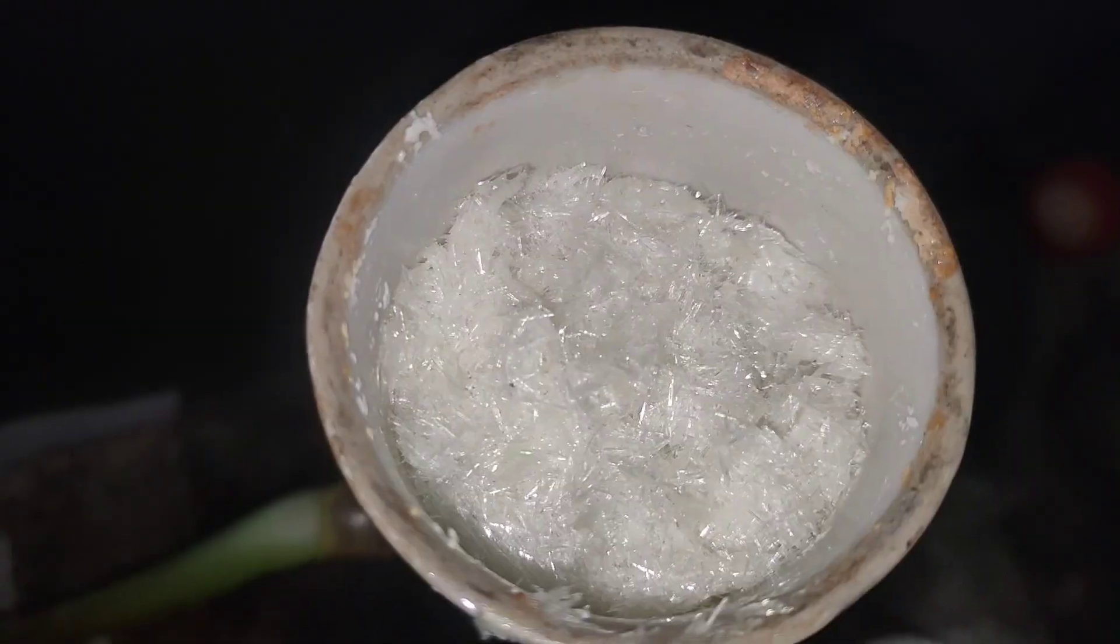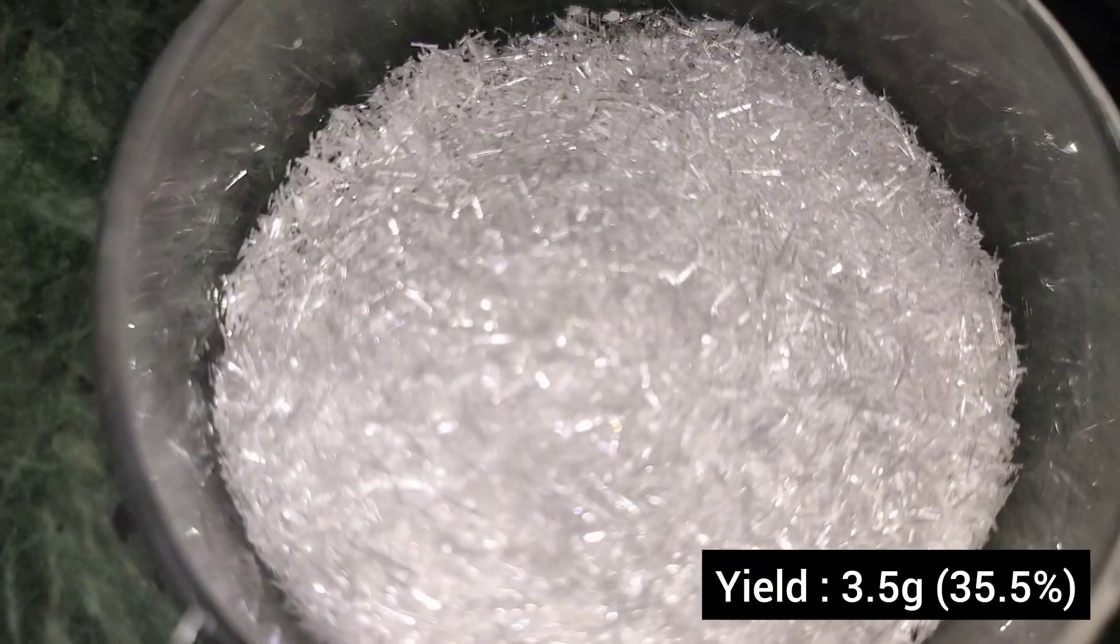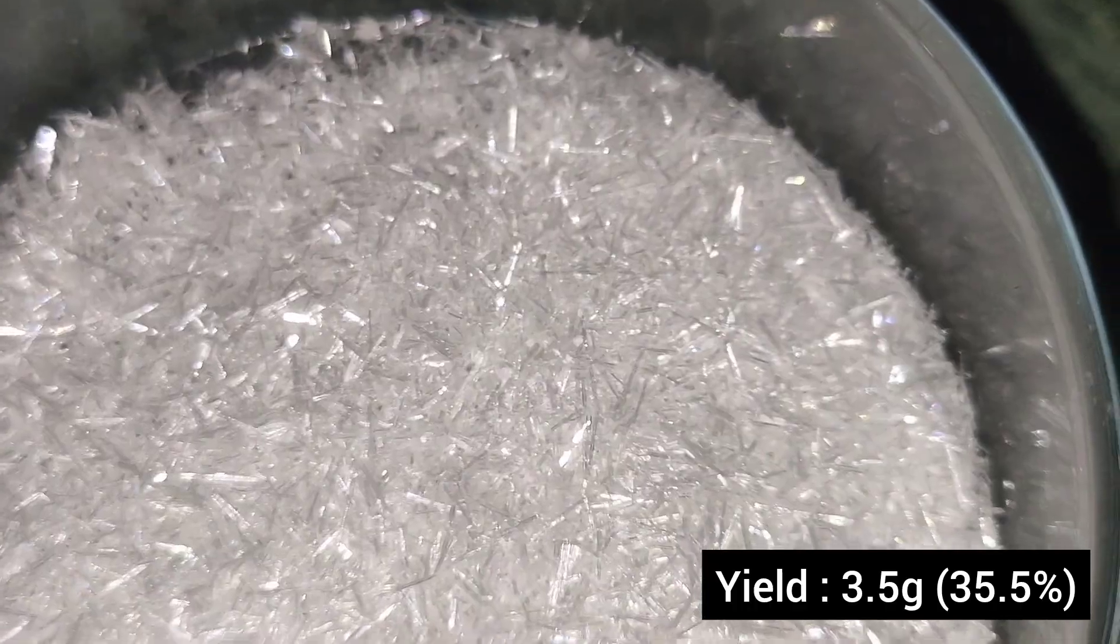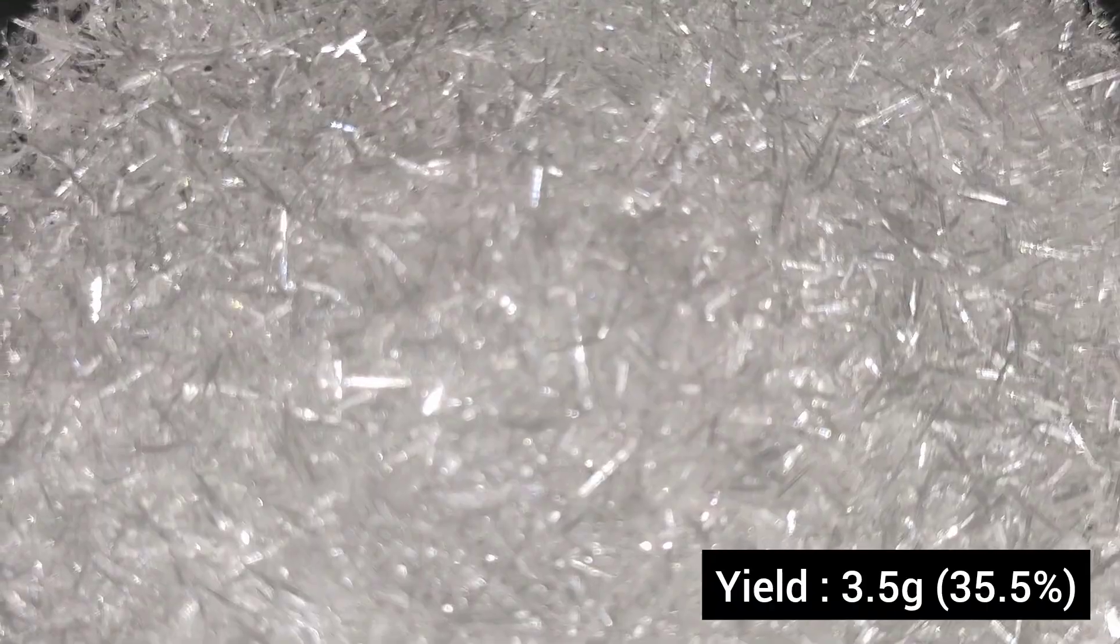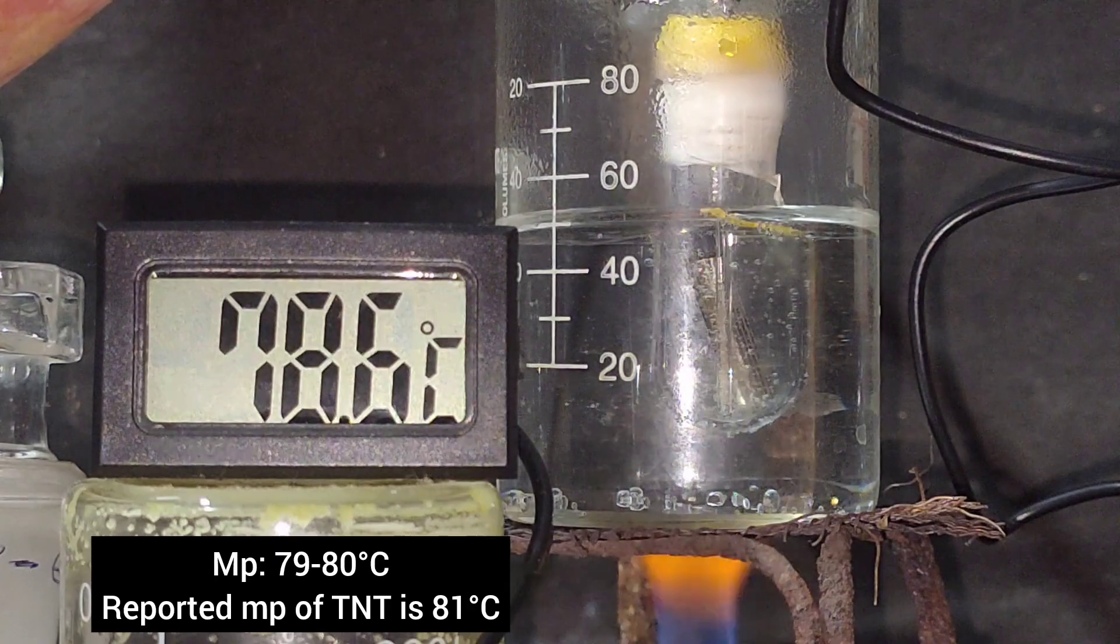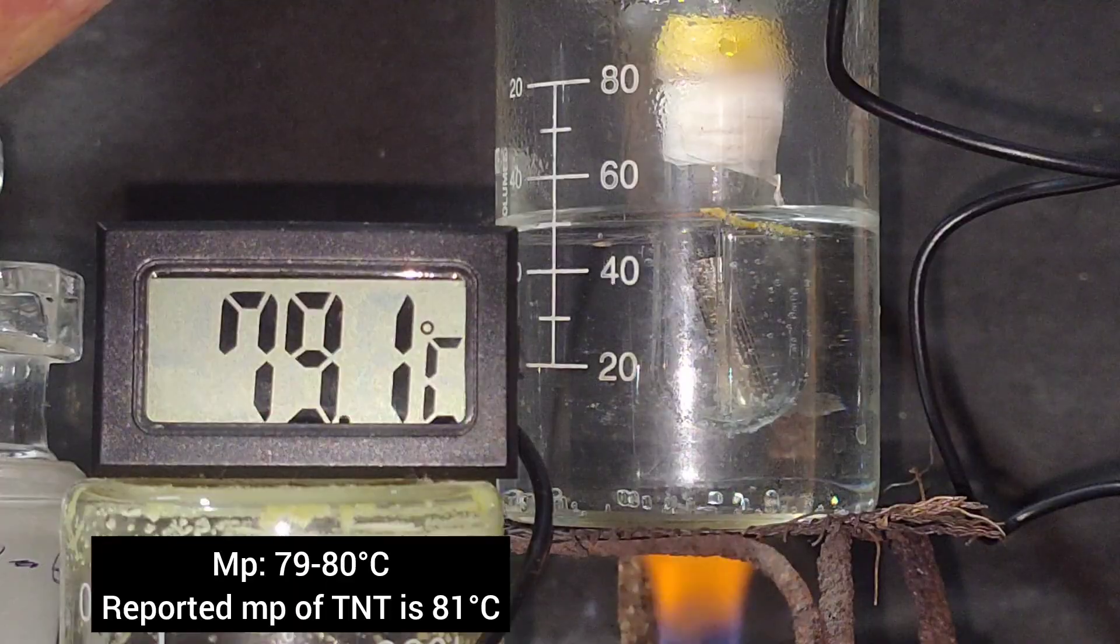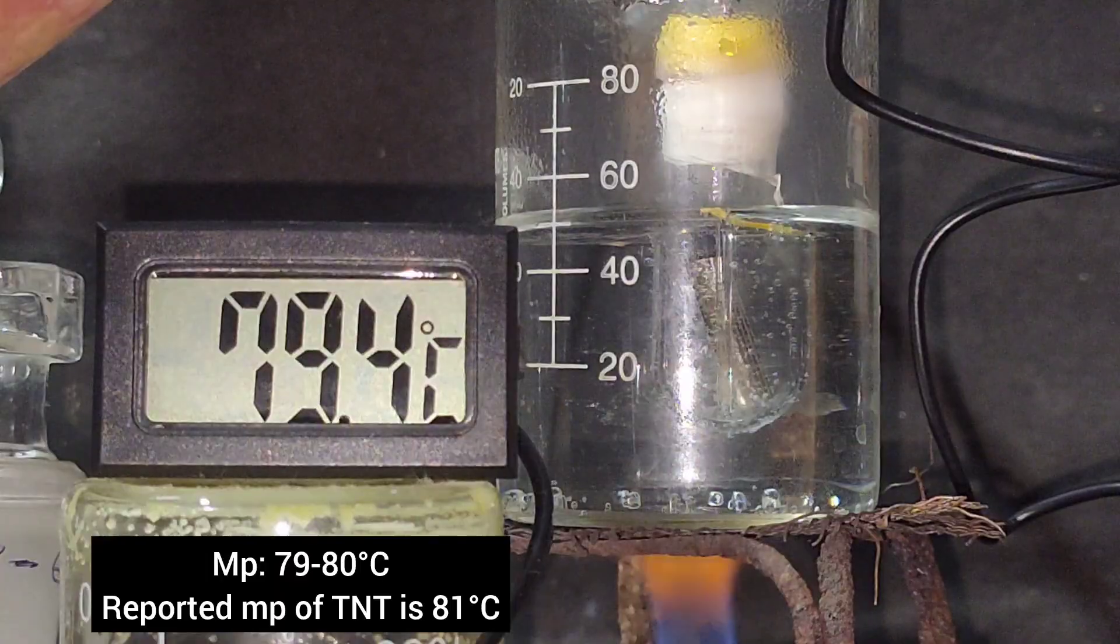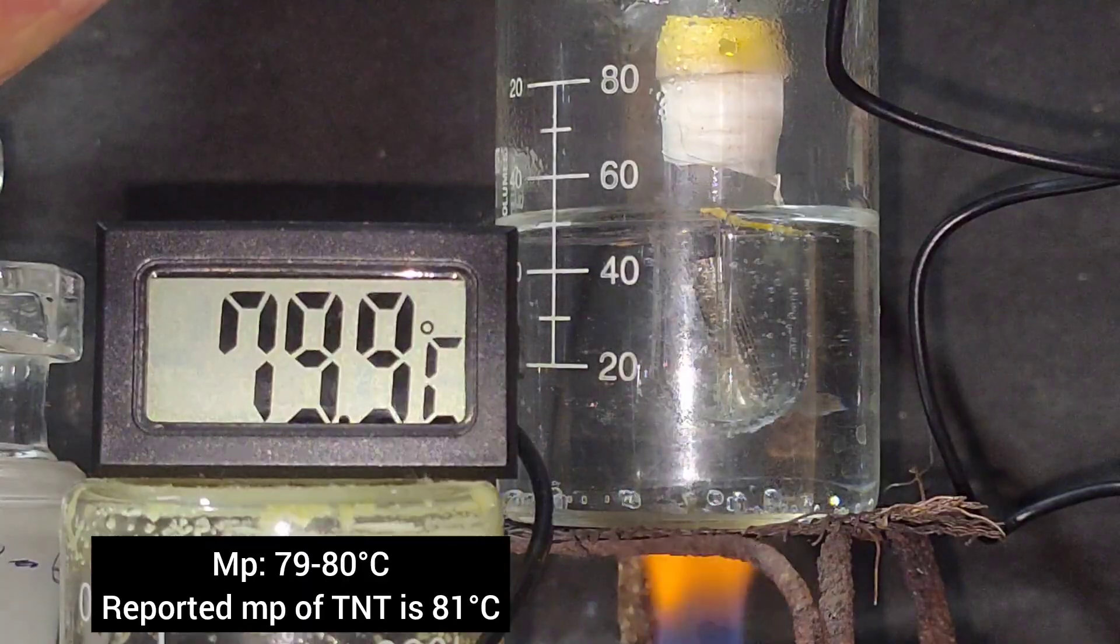Under a white LED they appear totally white, whereas under a fluorescent light they appear slightly yellow. The yield was 3.5 grams which corresponds to a percent yield of 35%. I checked the melting point of the TNT I made. It started melting around 79 degrees Celsius and completely melted at 80 degrees Celsius. The reported melting point of TNT is 81 degrees Celsius. Therefore my product is almost pure as the melting point is very close to the reported melting point.